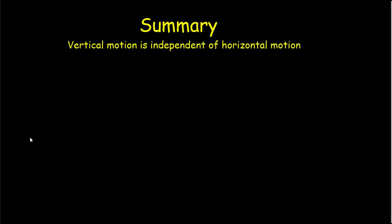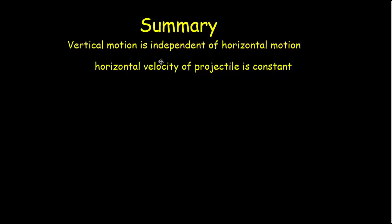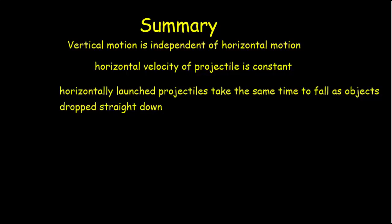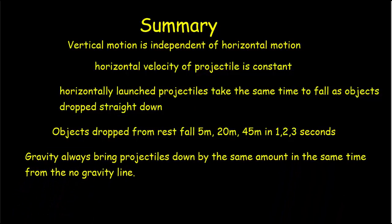So let's summarize our results for projectile motion. Vertical motion is independent of horizontal motion. There are no horizontal forces, so horizontal velocity remains constant with no horizontal acceleration. Horizontally launched projectiles always take exactly the same time to fall as objects dropped straight down. Objects dropped from rest fall 5 meters in 1 second, 20 meters in 2 seconds, and 45 meters in 3 seconds — the equation for that is d equals 5t². In the more complicated situation where a projectile is launched at an angle, gravity always brings the projectile down by the same amount from the no gravity line — as we saw in the monkey hunter problem.